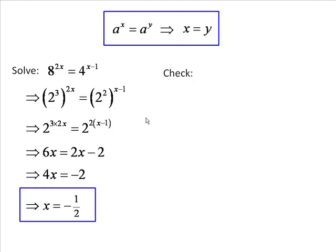Let's just check that. It's always a good idea to check if you can. First of all, the left-hand side of the equation, 8 to the power of 2x. If x is minus 1 half, then that becomes that expression, which becomes 8 to the minus 1, which is 1 eighth.